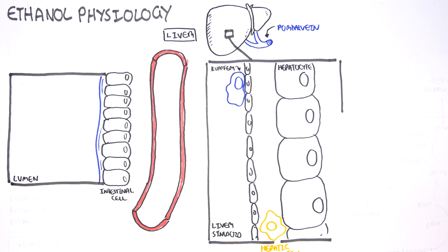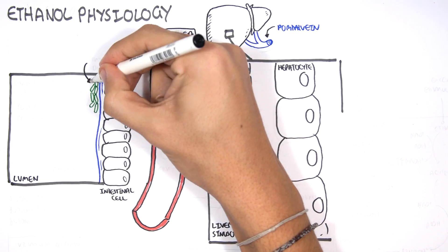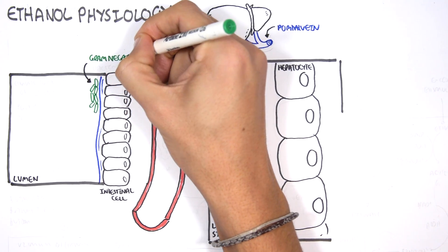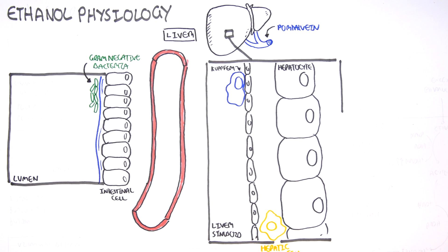Normally residing on the mucus throughout our gastrointestinal tract there are commensal bacteria, mainly gram-negative bacteria. Commensal bacteria are just bacteria that live there in unison with the organism, which is us in this case. Ethanol has an impact on these gram-negative bacteria, and we will see what happens.